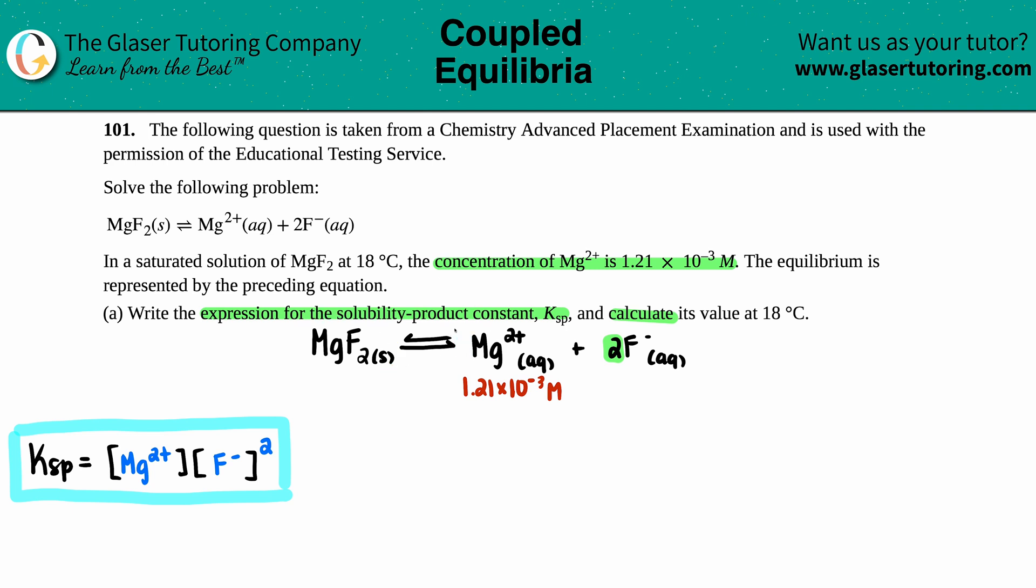There's nothing else that's affecting this concentration value and this solubility. I do have to look at those coefficients. There was 1 Mg for every 2F-. So how are we going to find out the F- concentration? Well, it's a 1 to 2 ratio. So whatever this one's got, this one has twice as much. I would just have to take this number and times it by 2. 1.21 times 10 to the negative third times 2 is 2.42 times 10 to the negative third molarity.